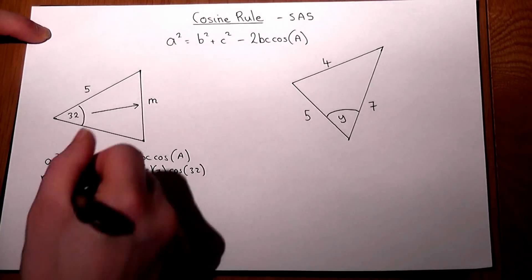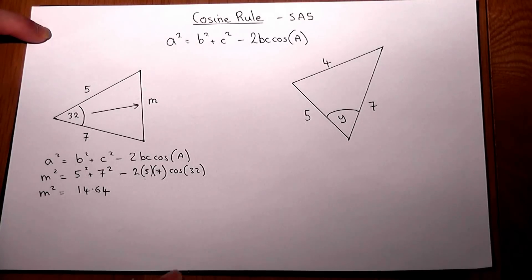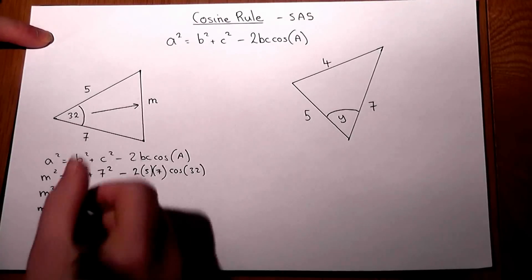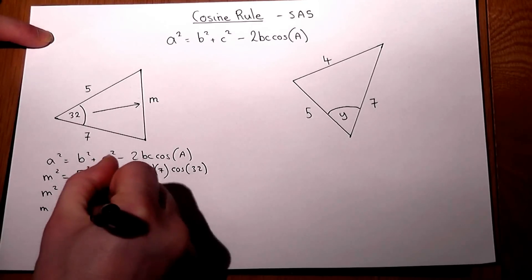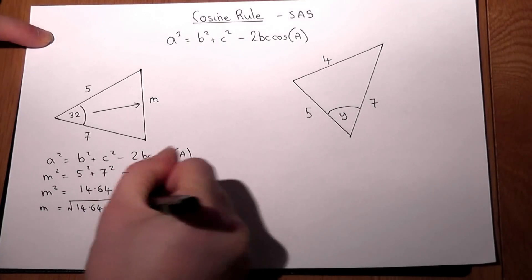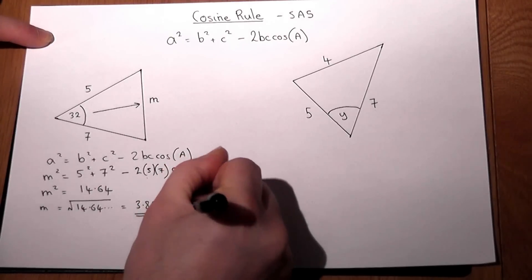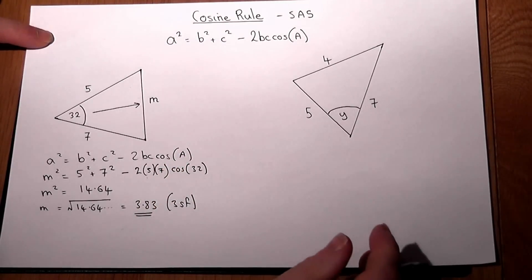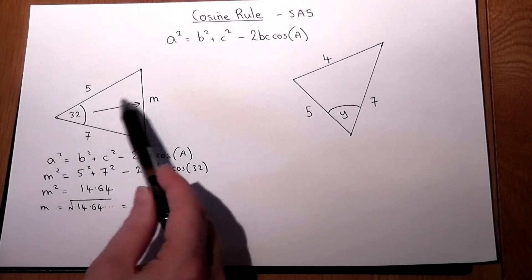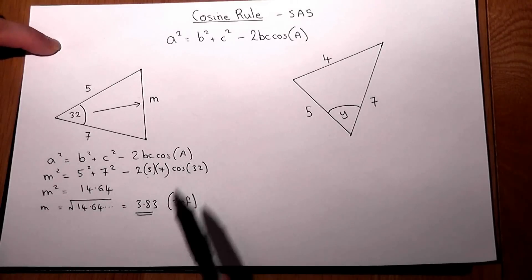Press enter and we get 14.6 to four significant figures. Then to find what M is, we just work out the square root of that particular answer and we get 3.83 to three significant figures. So to find a side opposite an angle when it's contained within two known sides, we use the cosine rule.